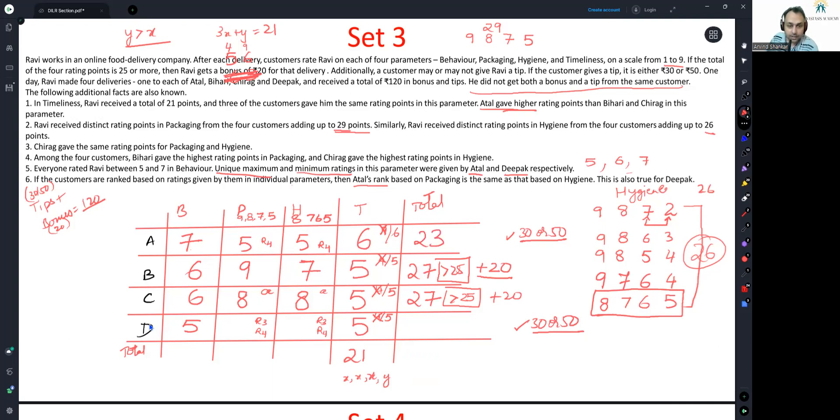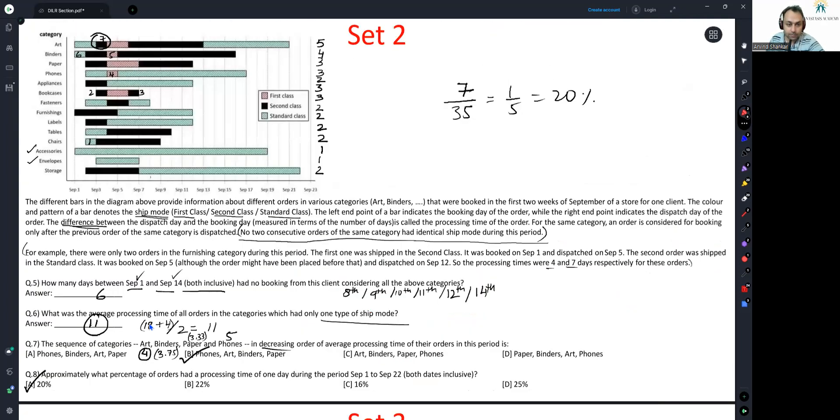Correspondingly, what is left here is a 7 and a 6 here. 7 plus 5, 5 plus 7 is 12, 12 plus 11 is 23. This is also uniquely known. What precise tip amount Atal or Deepak have given, that cannot be asserted. But this much can be known. The total here is of course 26. The total of course here is 29. The total here is of course 24. We can get to our individual questions now.